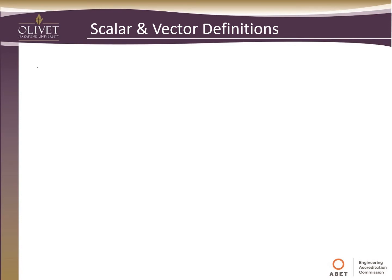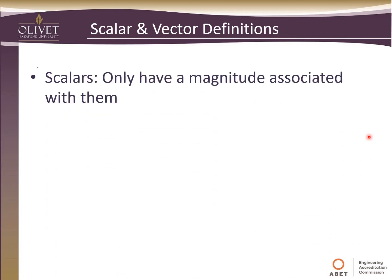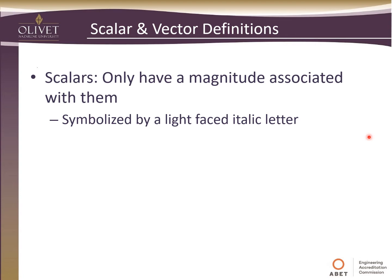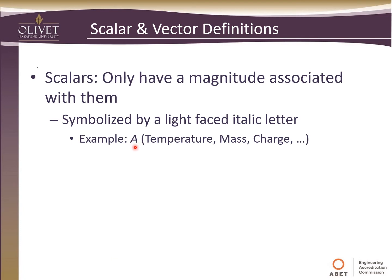Let's start with some definitions. First, we want to talk about scalars — these are things that only have a magnitude associated with them. We'll see these symbolized as a light-faced, italicized letter, such as this A here. Some examples of scalar values are temperature, which doesn't have a direction associated with it, mass, or charge. These are examples of scalar items.